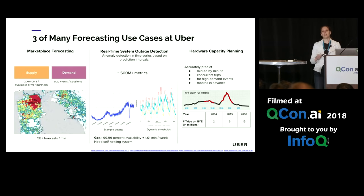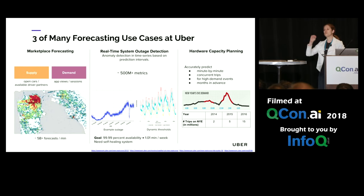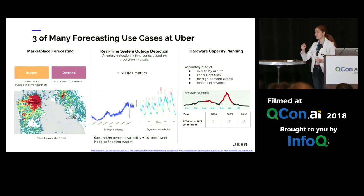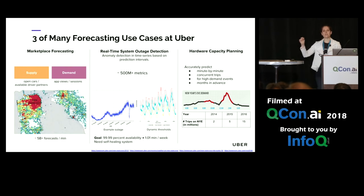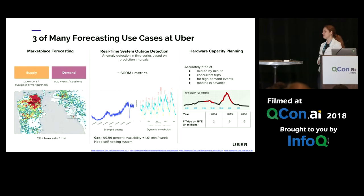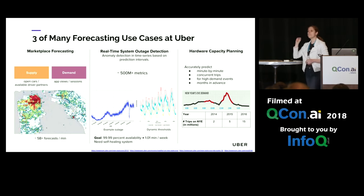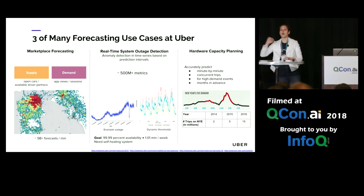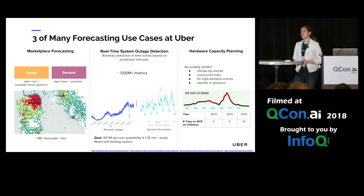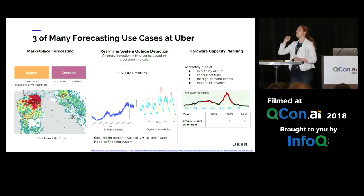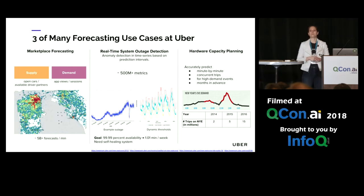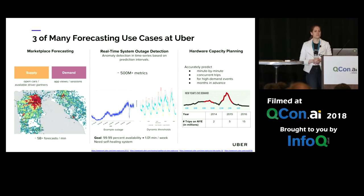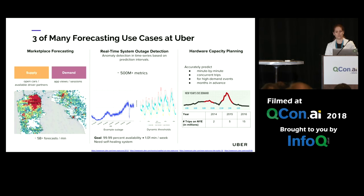So really it's about the Goldilocks principle — not too much and not too little hardware. This is a very challenging task as we have to forecast minute by minute, multiple months in advance, often for special events that only occur once a year. And given that Uber is such a young company, this is very challenging overall.